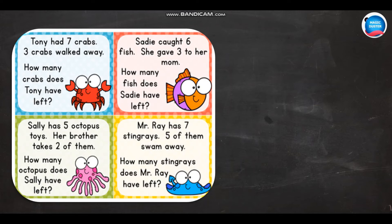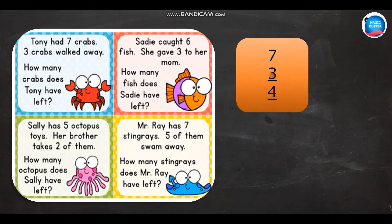The first one: Tony had seven crabs. Three crabs walked away. How many crabs does Tony have left? To find the difference, I should write the larger number above and the smaller number below. So, seven minus three is four.